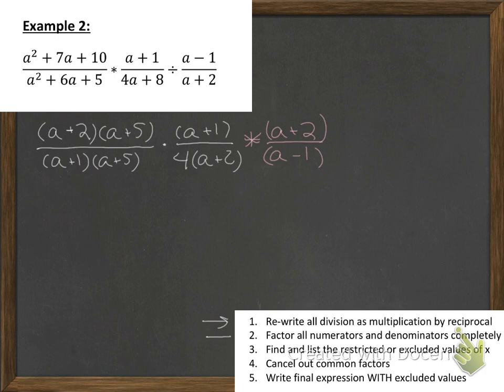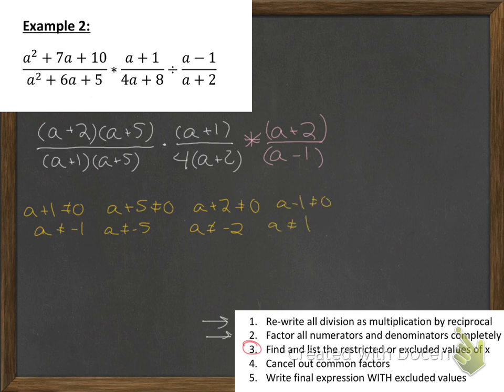So we have done our factoring. But remember, before we can cancel out our common factors, we need to think about what are those restricted values. And boy, do we have a lot of them this time. This whole denominator—all of those linear terms—none of them can be equal to 0. So let's just start listing them. Well, a + 1 can't be equal to 0. So a can't be equal to negative 1. a + 5 can't be equal to 0. We don't worry about 4. 4 is just 4. He's never going to change. He's not a variable. So he's not really part of this. He's just hanging out. So a can't be equal to negative 2. And a, it looks like, cannot be equal to positive 1 either.